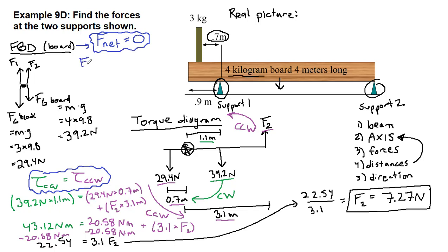That means that we add these two forces that are pointing in the same direction. We'll subtract 29.4 because it points opposite of those. We'll subtract 39.2 because it also points opposite. All that adds up to zero.